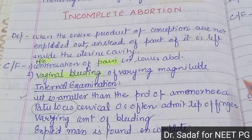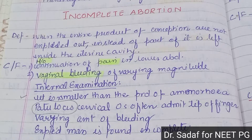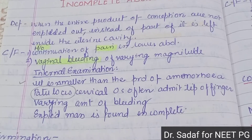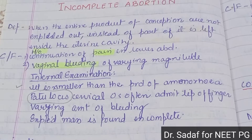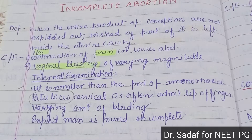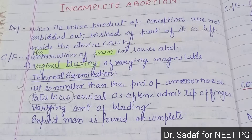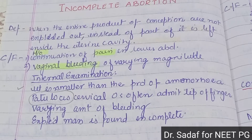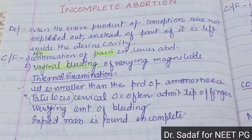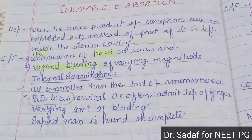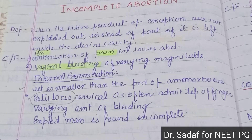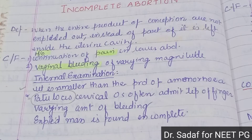What happens in incomplete abortion? The clinical features include: history of continuation of pain in the lower abdomen, and vaginal bleeding of varying magnitude. On internal examination, the uterus is smaller than the period of amenorrhea because some product of conception has already been expelled. The cervical os is patulous and can admit the tip of a finger, with a varying amount of bleeding present.